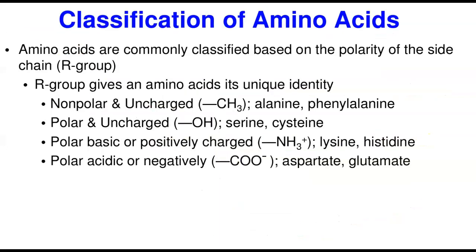How do we classify amino acids? Amino acids can be classified in two ways: by nutrition or by the polarity of the side chain. The polarity of the side chain is the most common classification, and for this class we'll classify them into four classes according to the polarity of their side groups.